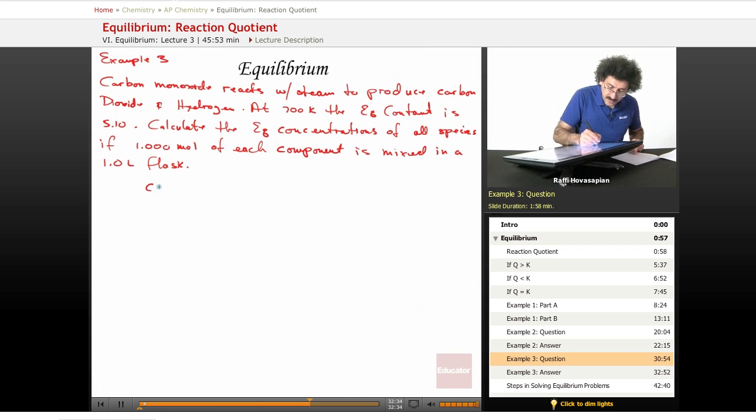Okay, our reaction is, they said carbon monoxide gas plus steam, which is H2O gas, forms carbon dioxide gas plus hydrogen gas. So that's our reaction. And it is balanced, so it's 1, 1, 1, 1.